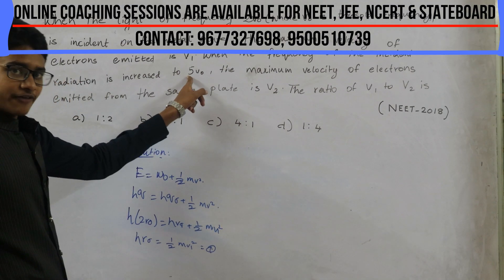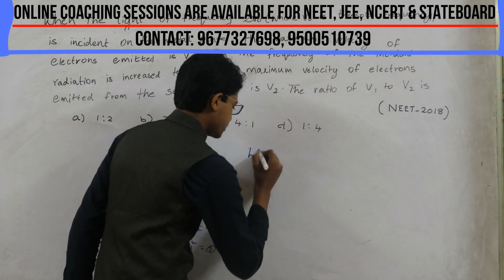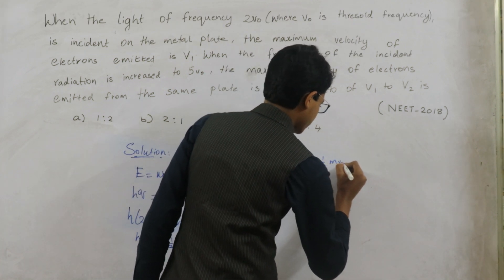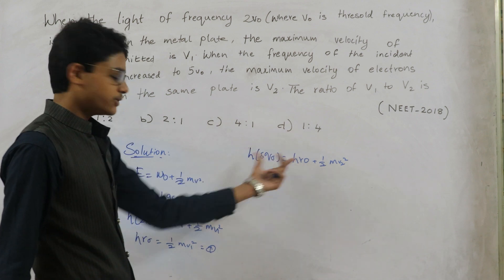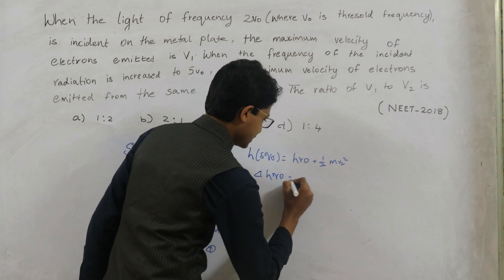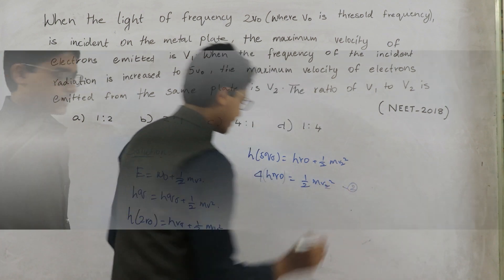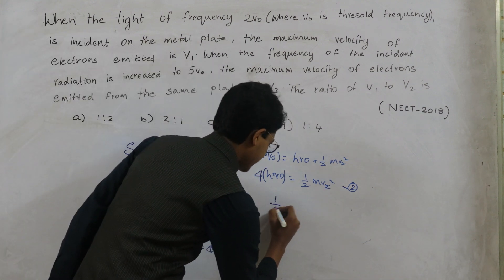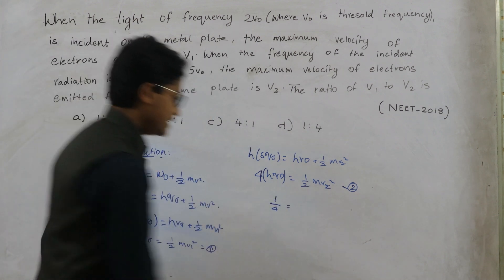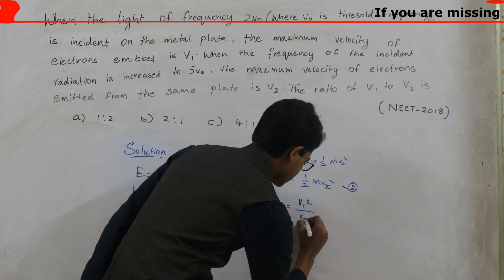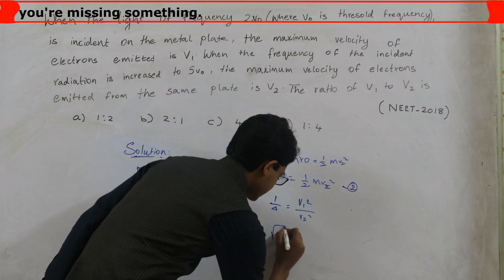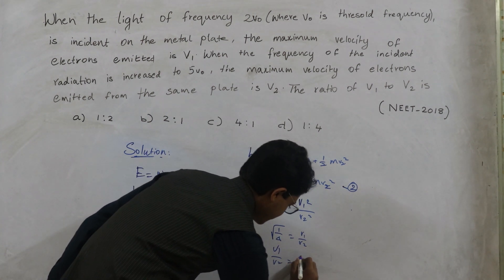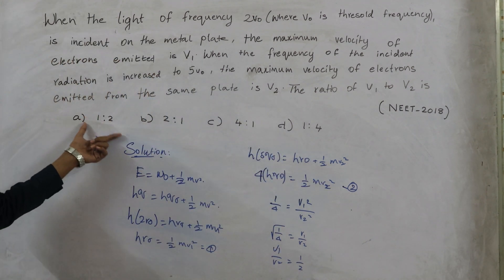Similarly, substituting 5ν₀ in place of ν, we get h(5ν₀) = hν₀ + ½mV2². Transposing hν₀ to the left-hand side, the hν₀ terms cancel, leaving 4hν₀ = ½mV2². Dividing equation 1 by this result, the ½m terms cancel, giving V1²/V2² = 1/4. Taking the square root of both sides, V1/V2 = 1/2. The answer is A — 1 is to 2.